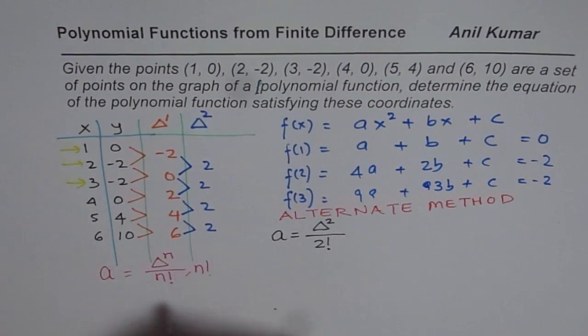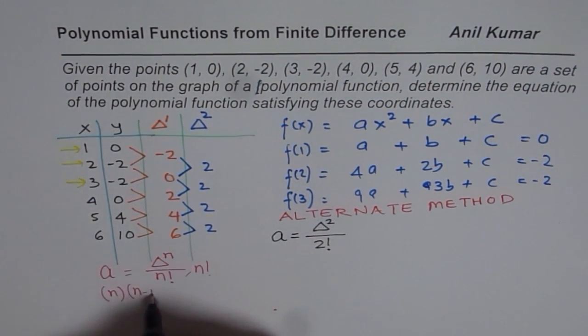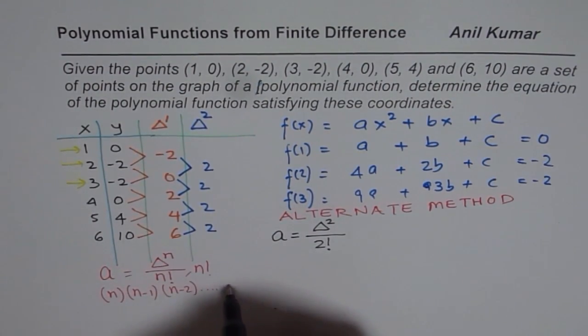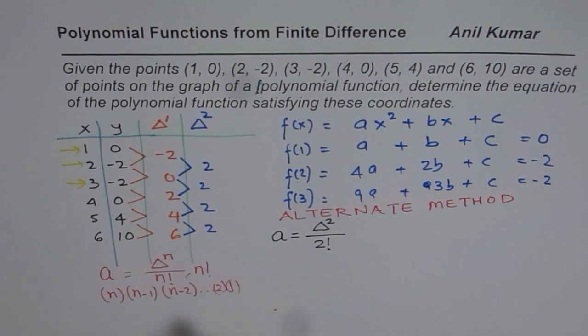So that is what leading coefficient should be. In general, let me write down big and bold this equation. Leading coefficient a in general is equals to, if the nth finite difference is constant, then it is over n factorial, where meaning of n factorial is what? You know that. It is n times, n minus 1 times, n minus 2 times, so on, till 1. I should write 2 times 1, till like this.